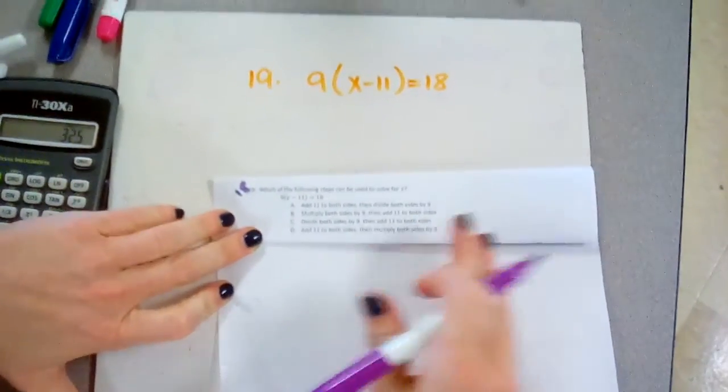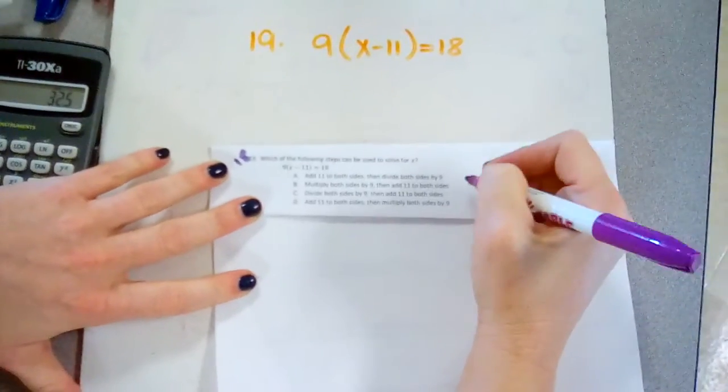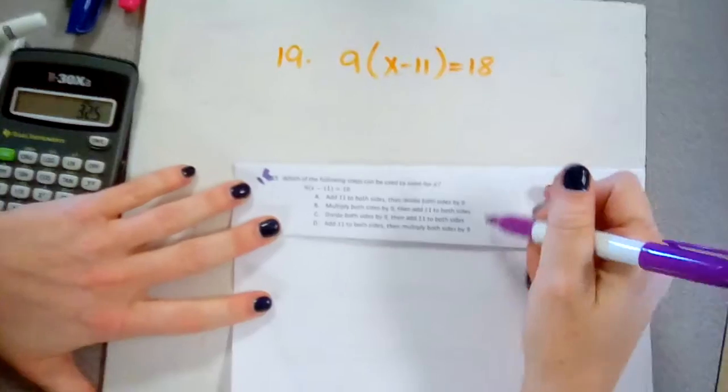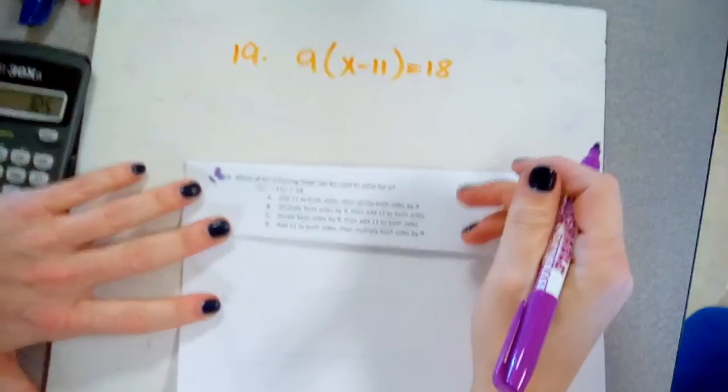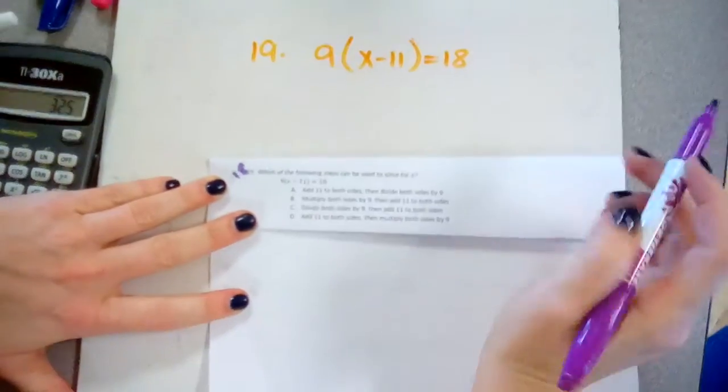All right, here we go. Question 19. We see an equation here and it's wanting to know which of the following steps can be used to solve for x. This is a tricky question because only one of these are really something that you can do and it doesn't follow the rule that we have of distributing when we have parentheses.